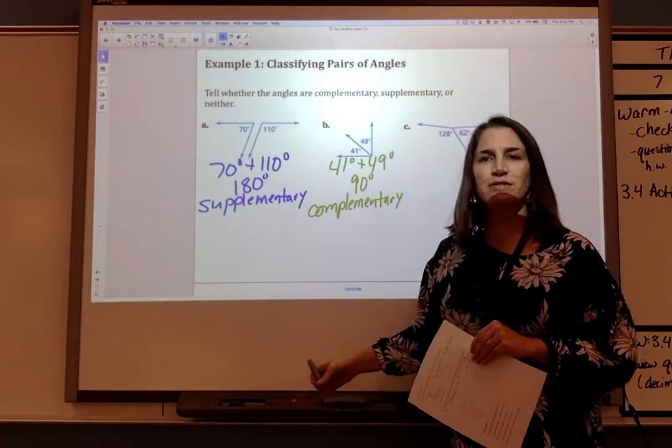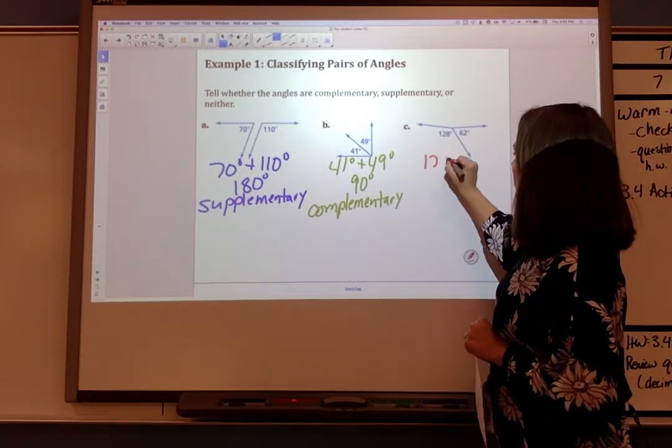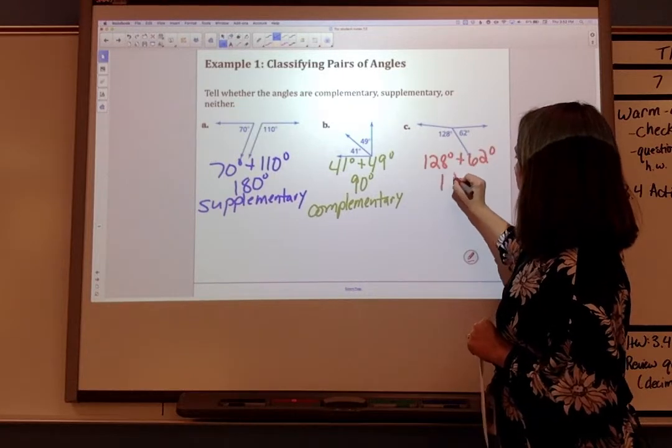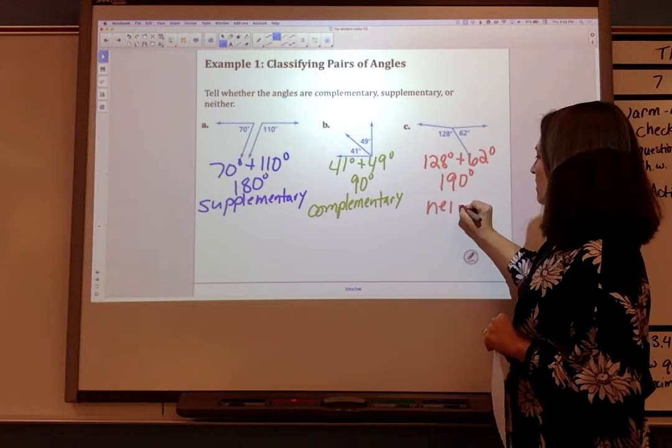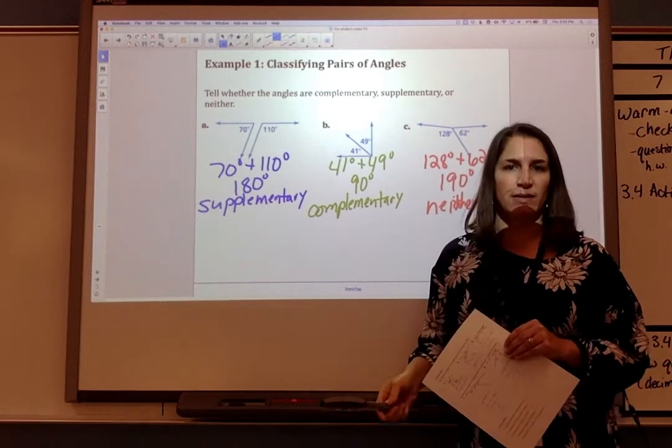And my third set of angles is 128 degrees and 62 degrees. 128 plus 62 is 190 degrees. So this pair of angles is neither complementary nor supplementary.